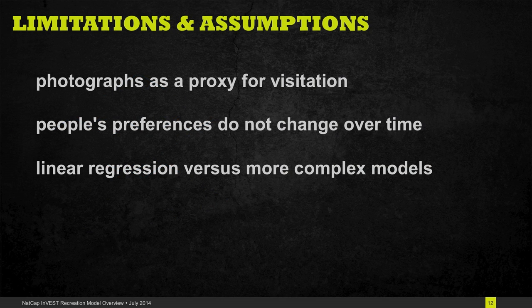Some of the limitations and assumptions of this model that might be important to keep in mind are that we're using photographs as a proxy measure of where people go. This is an estimate of the visitation rate in any given place. We also assume that people's preferences don't change over time, so we calculate the effect of each of those predictors on visitation and use that effect size as our basis for determining how changes in those layers might result in changes in visitation in the future.